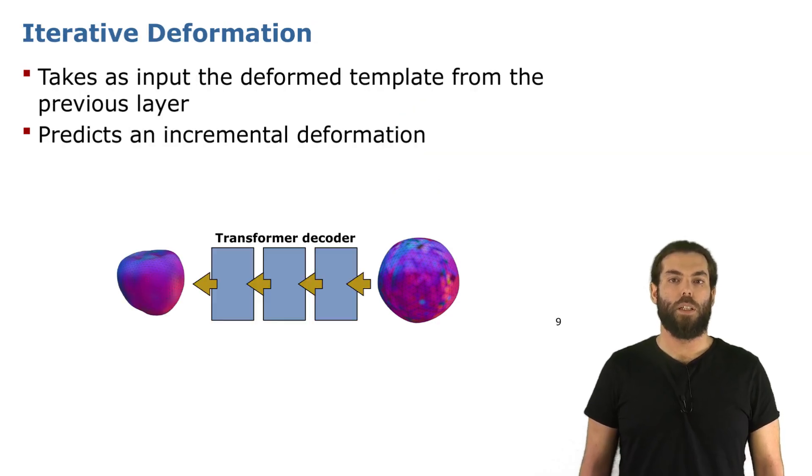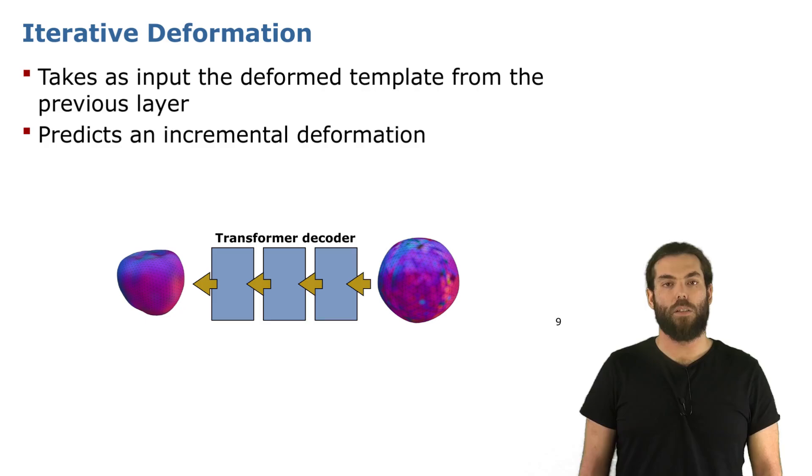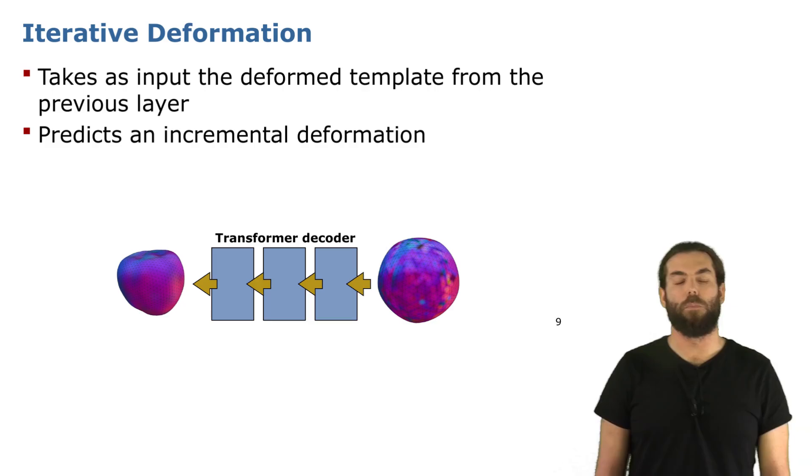Then we pass them through a series of transformer layers that we combine in a transformer decoder and each of these layers takes as input a slightly modified version of this template because the output of each transformer layer is an incremental deformation. What I mean is that instead of predicting a single deformation for each vertex, we deform it little by little so that by the end of this transformer decoder, we obtain a three-dimensional mesh that represents as close as possible the complete fruit as you can see there on the left.